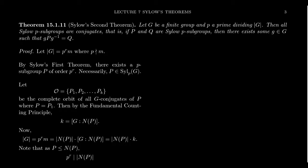The second theorem says that different Sylow P subgroups are really not that different. Imagine we have some finite group G and P is some prime divisor dividing the order of G. Then we get that all Sylow P subgroups are conjugates of each other. So in particular, if P and Q are two distinct Sylow P subgroups, there exists some element of the group G so that gPg⁻¹ is equal to Q.